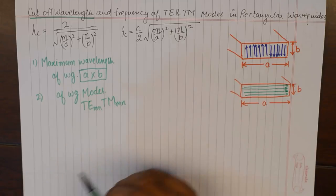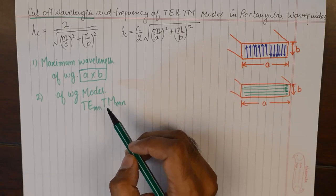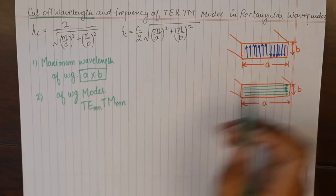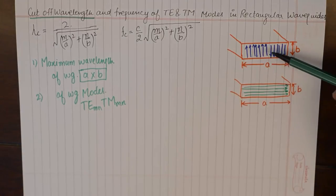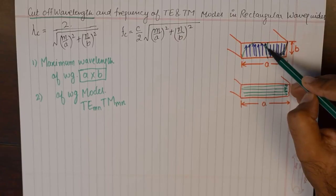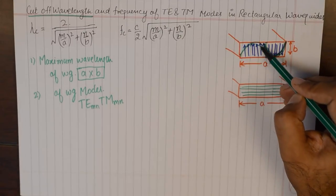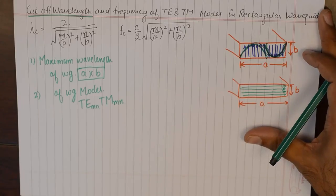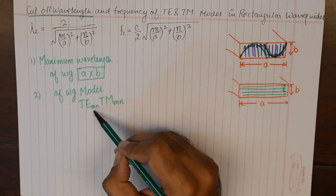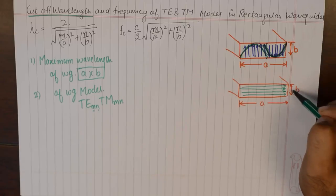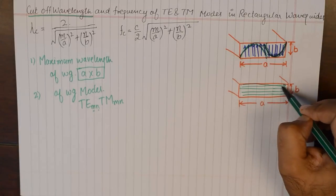M is the number of half cycles along the broader direction A. For example, just by looking at the diagram we could infer that two kinds of modes are being made to propagate along the broader direction A. And N is the number of half cycles which are sent along B. So the number of half cycles sent along B in this case is just one.